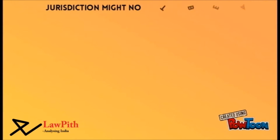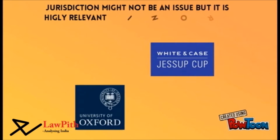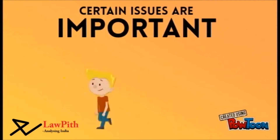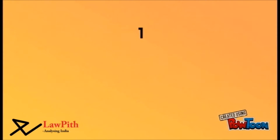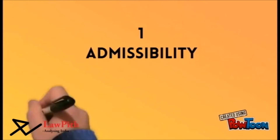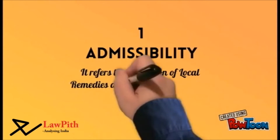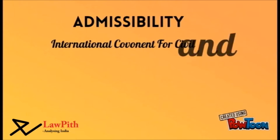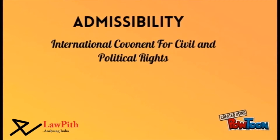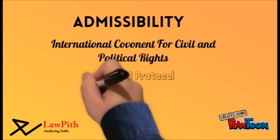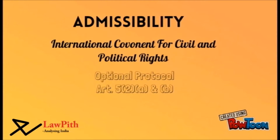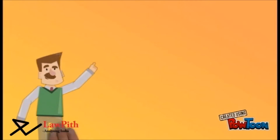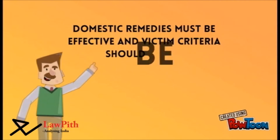Due to this status quo, majority of international moot court competitions do not delve into the question of jurisdiction. However, there are certain issues which are important and needed to be understood in this context. The first issue is of admissibility of a dispute, which simply means exhaustion of local remedies at the domestic level. It is a procedural requirement which is well recognized in international law. It is principally provided in the International Covenant for Civil and Political Rights. The ICCPR in its optional protocol articles 5(2)(a) and (b) talks about exhaustion of local remedies. Major issues which engage in the mooting series when we talk about admissibility are effectiveness of the remedy and satisfaction of the victim criteria.